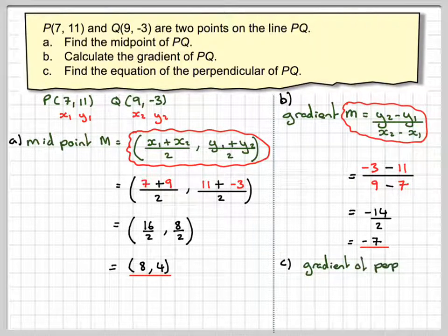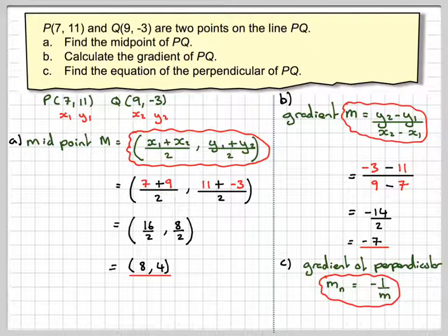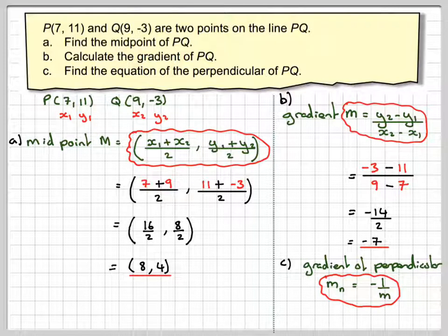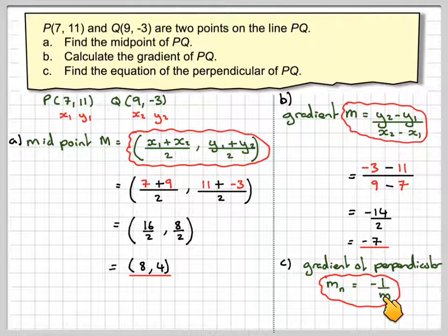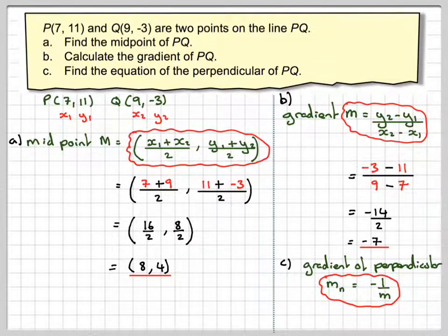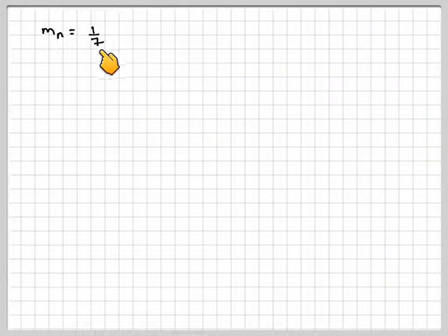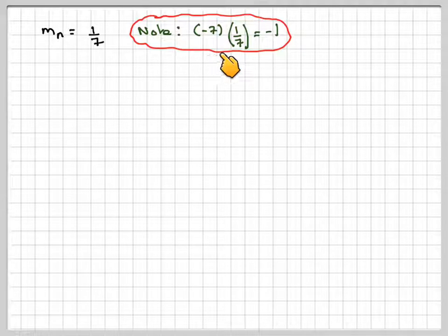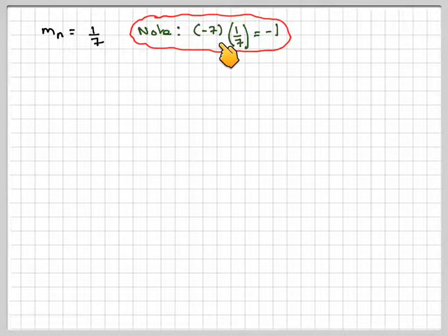Right, in order to find the equation of the perpendicular, we now need to find the gradient of the perpendicular. The gradient of the perpendicular is minus 1 over the gradient you just calculated. So we need to do minus 1 over minus 7, which gives a gradient of 1 over 7. The minus signs cancel out. Another check you can do is that minus 7 times 1 over 7. If we multiply these together, we get minus 1, which is the condition for perpendicular lines.